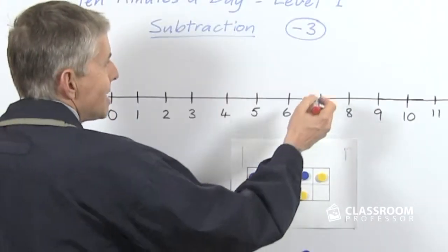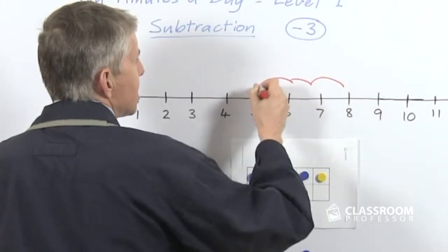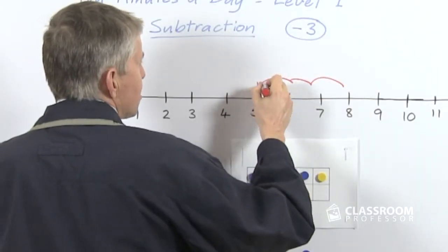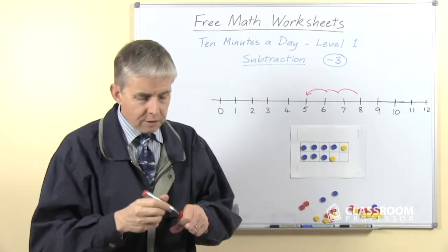If we start from 8 and count back 3, we can easily see—let's count back 3 steps—and we'll get to 5. So 8 take away 3 is 5.